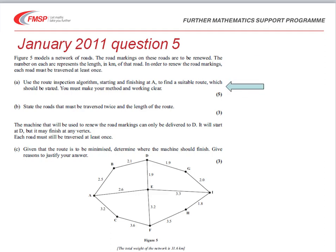It says we are to use the route inspection algorithm, starting and finishing at A, to find a suitable route which should be stated. You must make your method and working clear. In particular, state the roads that must be traversed twice and the length of the route. Notice in the diagram at the bottom there, we are told that the total weight of the network is 31.6 kilometers. That will be useful.